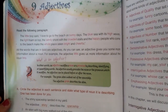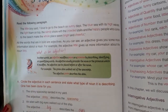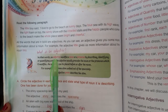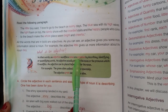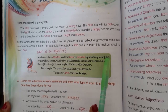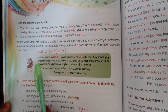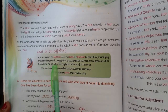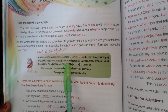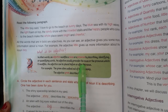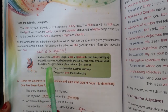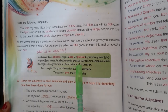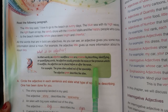What is an adjective? An adjective modifies a noun or a pronoun by describing, identifying, or quantifying words. An adjective usually precedes the noun or the pronoun which it modifies. An adjective can be placed before or after the noun.